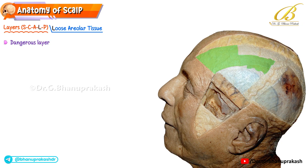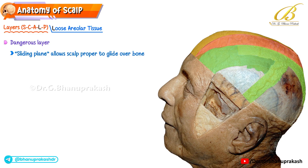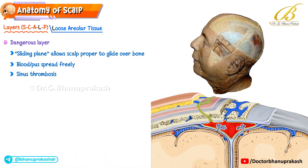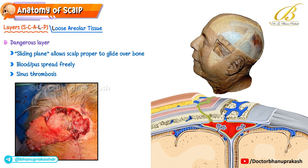Deep to this lies the loose areolar tissue, often described as the dangerous layer of the scalp. This layer forms a sliding plane allowing the scalp proper to glide freely over the skull. Clinically, it is dangerous because blood and pus can spread easily through this space, and emissary veins here communicate directly with the dural venous sinuses, meaning infections can track inward and potentially cause intracranial complications like cavernous sinus thrombosis.